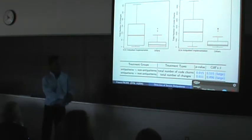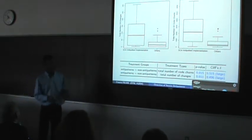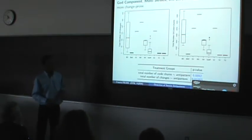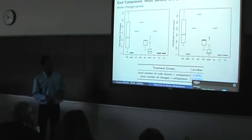This difference is further confirmed by Cliff's delta, which shows that those two distributions are really far from each other, so there is a large difference between them. For the second research question where we want to see if anti-patterns are equally change-prone or not, we found that GC (God Component), multi-service (MS), and service chain (SC) change a lot.